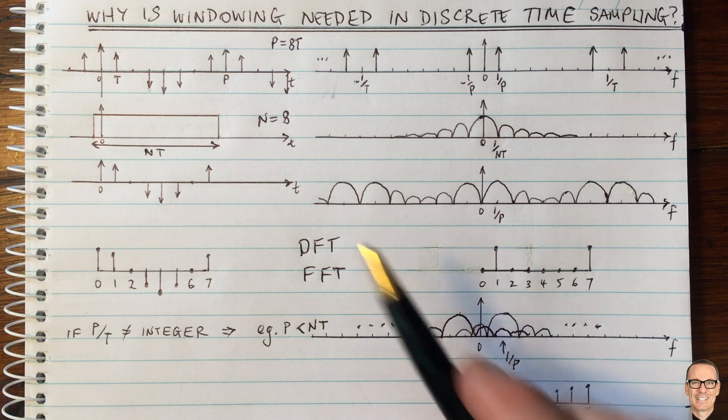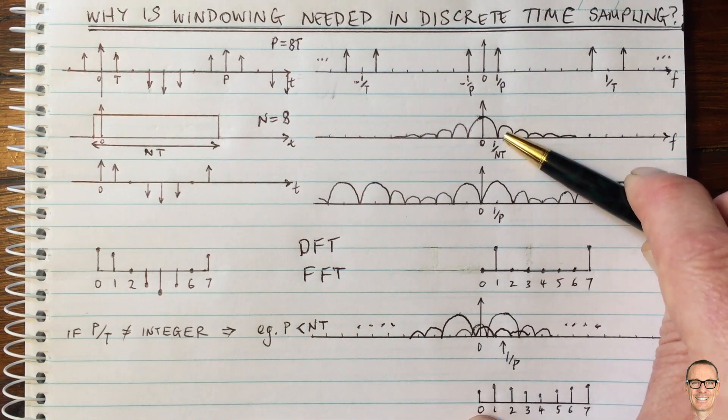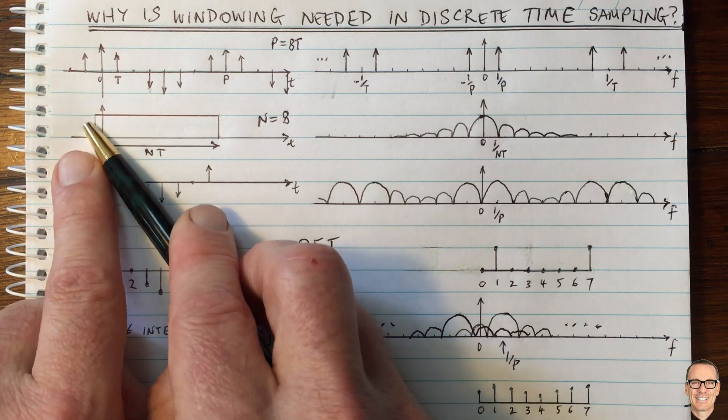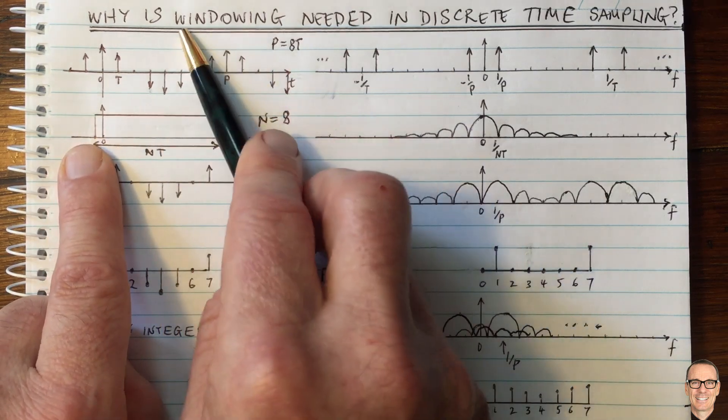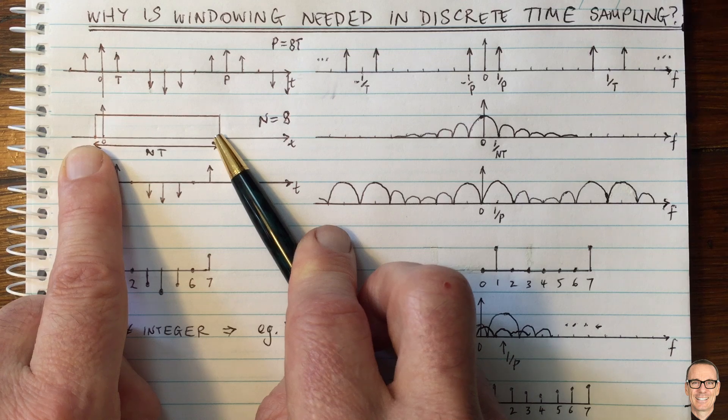But if you're going to be restricted in this, then what else can you do to lower the side lobes? You can change the shape of this function. That's all the other different windowing that you might have seen, the different shapes.